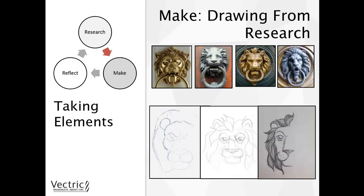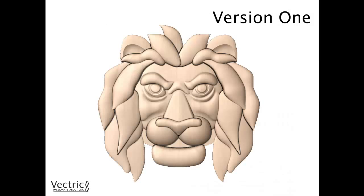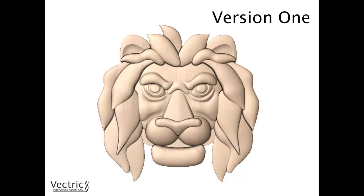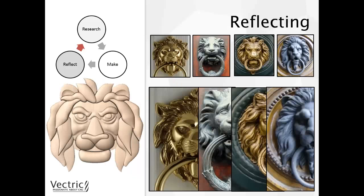There is quite an overlap between the research and making stages — while we are making, we are referring back to the research. I started to draw up several different sketches from the research, looking at the shapes and trying to come up with my own versions of the Lionhead. You don't have to do a sketch — you can take research material and create a collage to trace from, taking elements like ears from one example and the mane from another. I went with the middle sketch, took it into the software, created vectors, and ultimately created the model. I was fairly happy with what I achieved, and as I had the luxury of time I was able to step back and start reflecting on what I had made.